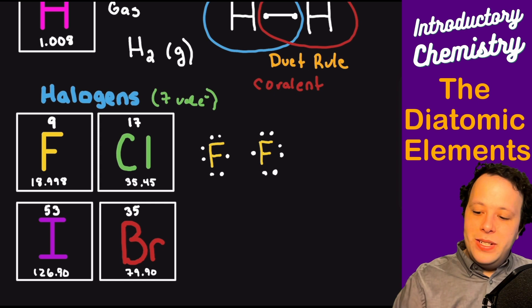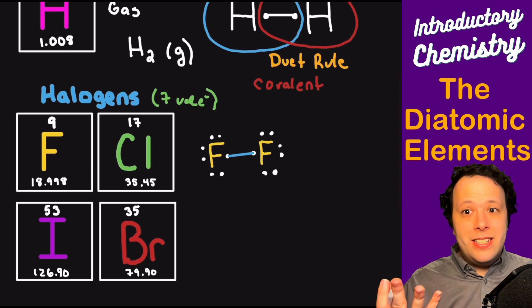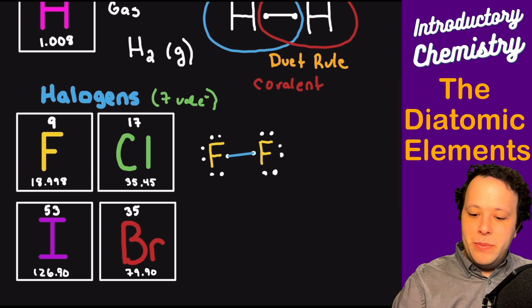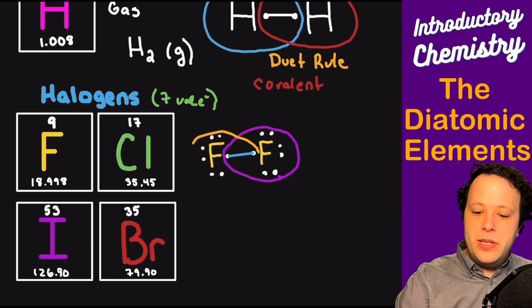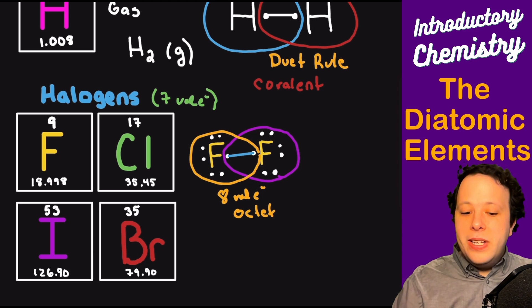If we were to draw all those little dots around fluorine around both of them, we'll line up the single dot next to its other species. One thing we're going to see is if this forms a single bond between them, it's sharing two electrons between both of them, meaning we have a total of eight on one side and the other.